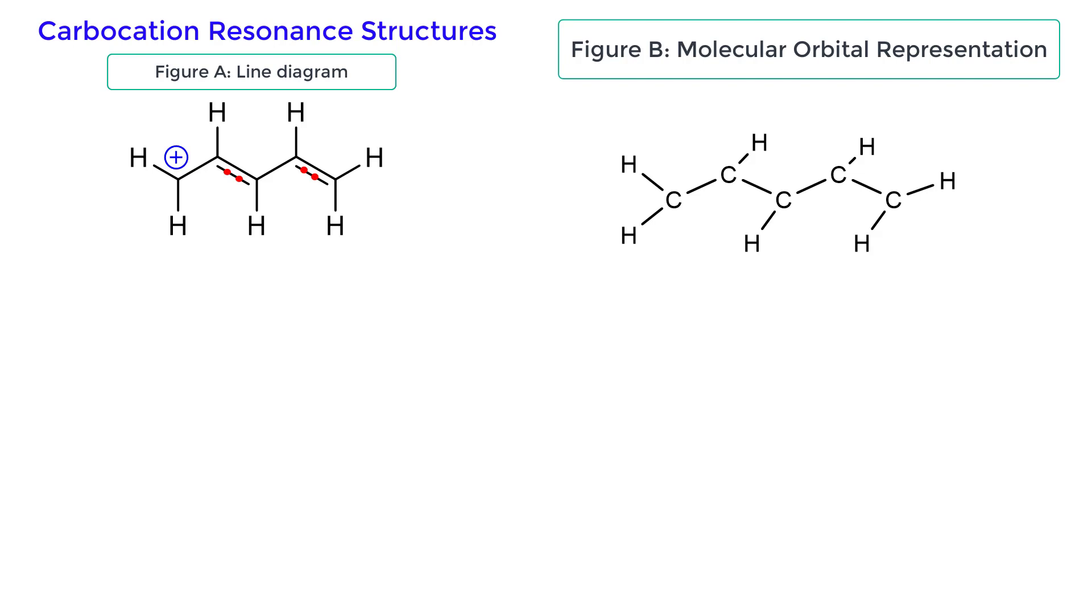The carbon that bears the positive charge has three valence electrons and is sp2 hybridized, which means that the carbon has an empty p orbital, as shown in figure B.